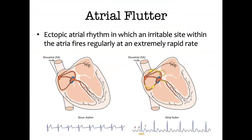Atrial flutter is an ectopic atrial rhythm — it's not coming from your SA node. It's an irritable site within the atria that fires regularly at an extremely rapid pace. As you can see here, in atrial flutter there's something irritable in the atria and you get a fluttering, producing what are called flutter waves. Atrial flutter has P waves that appear sawtoothed, also called flutter waves. When you analyze the ECG strip, you may see a ratio.